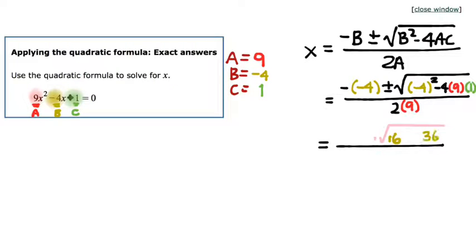Then I have 4 times 9 times 1, which is 36. Positive 36 this time, so when I bring that subtraction down, it's 16 minus 36. What did you get when you did 16 minus 36? Negative 20.